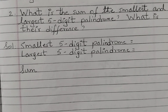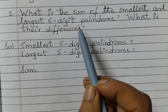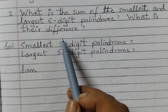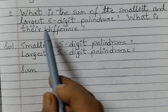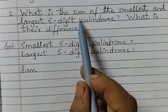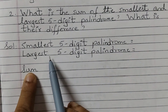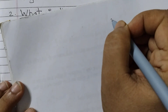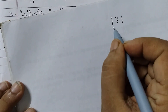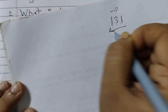Moving on to question number 2. What is the sum of the smallest and largest five-digit palindrome? What is their difference? First we need to find the smallest and largest five-digit palindromes, then add and subtract them. A palindrome is a number which reads the same from left to right and right to left. For example, 1,3,1 reads the same both ways.